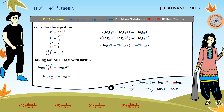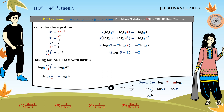All logarithms here are base 2. We know that when the base and argument are equal, the log equals 1, so log base 2 of 2 equals 1. Therefore x times (log 3 minus 2) equals minus 2, which gives x equals 2 divided by (2 minus log₂3). This matches option B, so option B is correct.